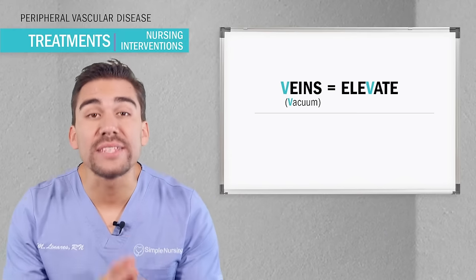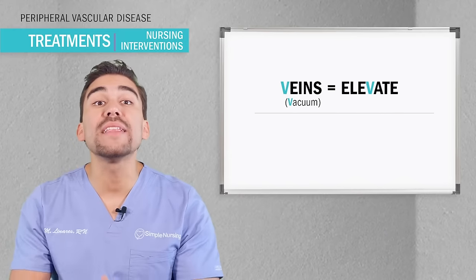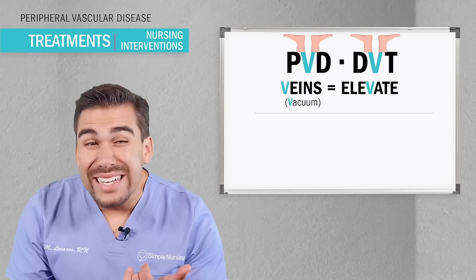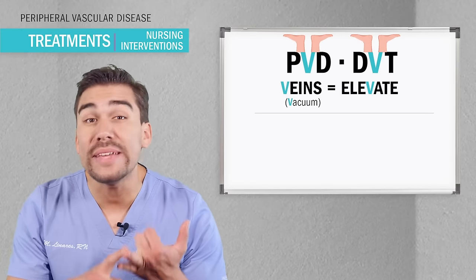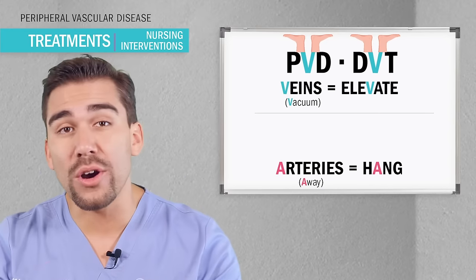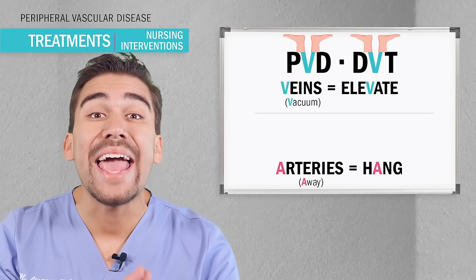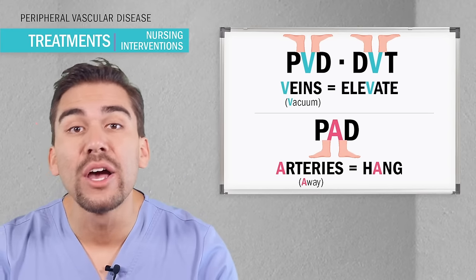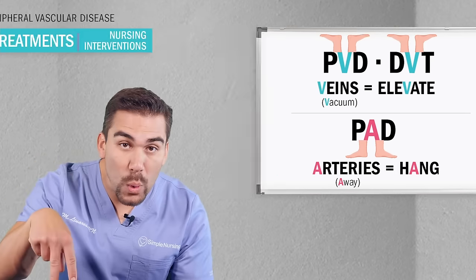And nursing interventions — the biggest NCLEX and test tip I can give you in this lecture is right here. So grab a pen and write this stuff down. Always ask: what makes the pain better? Veins — we elevate the veins. So PVD and even DVT, you're gonna elevate. And arteries — you always hang. So PAD, put the arteries down.